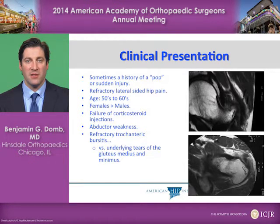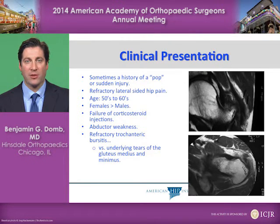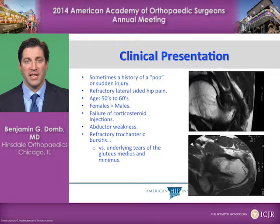Inevitably, the physician is faced with the dilemma of discerning between refractory trochanteric bursitis versus an underlying tear of the gluteus medius and/or minimus.